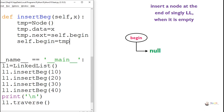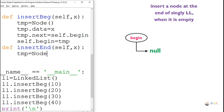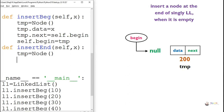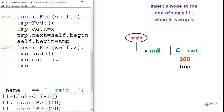This is the algorithm to insert a node at the end of a singly linked list. We write a new method inside the linked list class named insert_end, which takes a parameter x that needs to be inserted. First, we create a node named temp which has two parts: data and next. We store the value of x into the data part of temp and make the next of temp null, because this is going to be the last node.